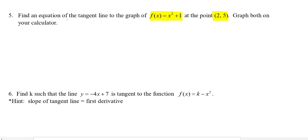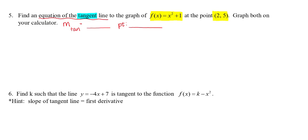One thing we should know is that if we're looking for an equation of any kind of line, we need two things: we need a slope and we need a point. Specifically, because we're trying to find information about a tangent line, I'll label these as tangent. The slope of the tangent line — from previous sections — is the first derivative. So I will find the first derivative of my function.